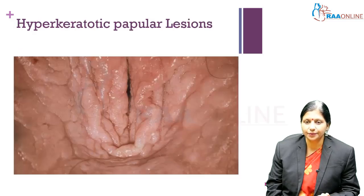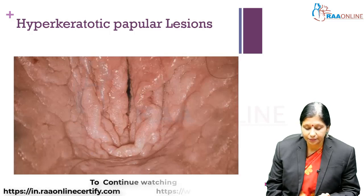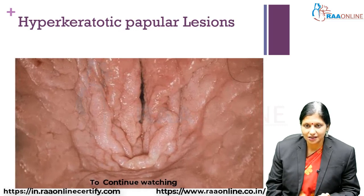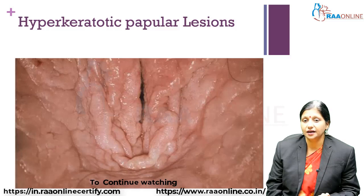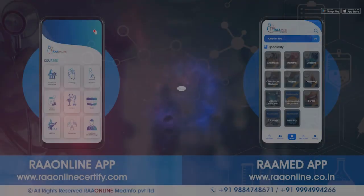Clinically, a hyperkeratotic papular lesion is seen in the vulva. This is considered a premalignant lesion and a vulval dermatosis. The patient presents with vulval itching, and biopsy reveals a thickened membrane.